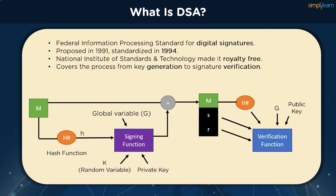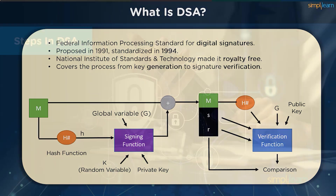The value generated by the function is then compared to R. If they match, then the verification process is complete and data integrity is verified. This was an overview of the way the DSA algorithm works. We already know it depends on logarithmic functions to calculate the outputs, so let us see how we can do the same in the next section.